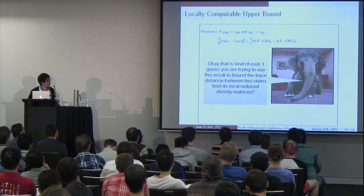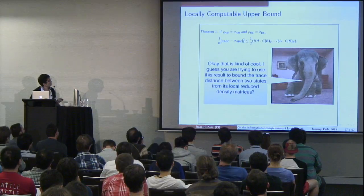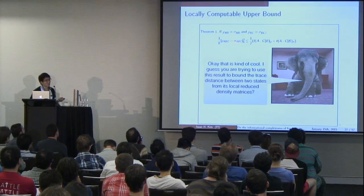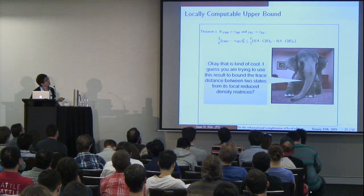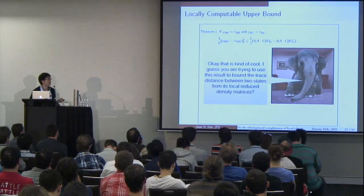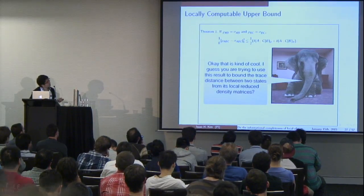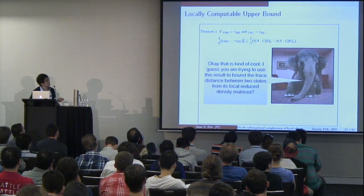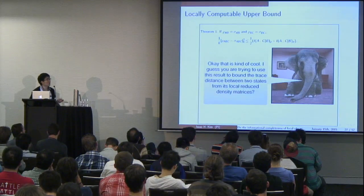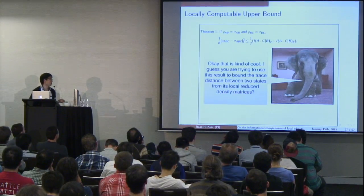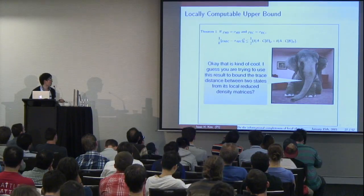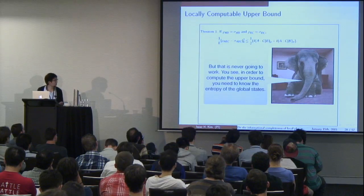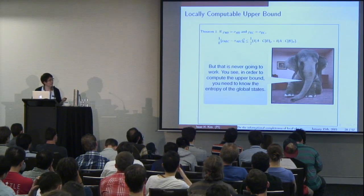At this point there's an elephant in the room. What I promised to deliver was a way to certify that two multipartite states are very close globally from information about local reduced density matrices. But this upper bound actually depends not only on entanglement entropy over AB, BC, and B, but also the entropy of ABC. In order to compute that, generically you need to know the global state. So you might think we're kind of doomed — let's try to see how we can avoid this problem.